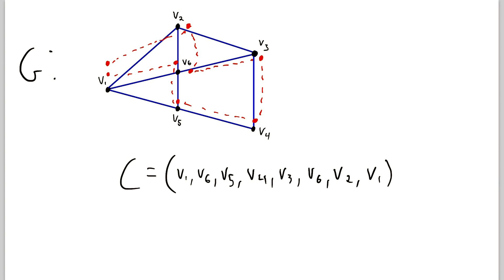Now as a quick recap of trails, a trail is a sequence of vertices in a graph such that consecutive vertices are adjacent in the graph and no edge is traversed more than once. So you can see in this circuit C, consecutive vertices are adjacent in the graph G.